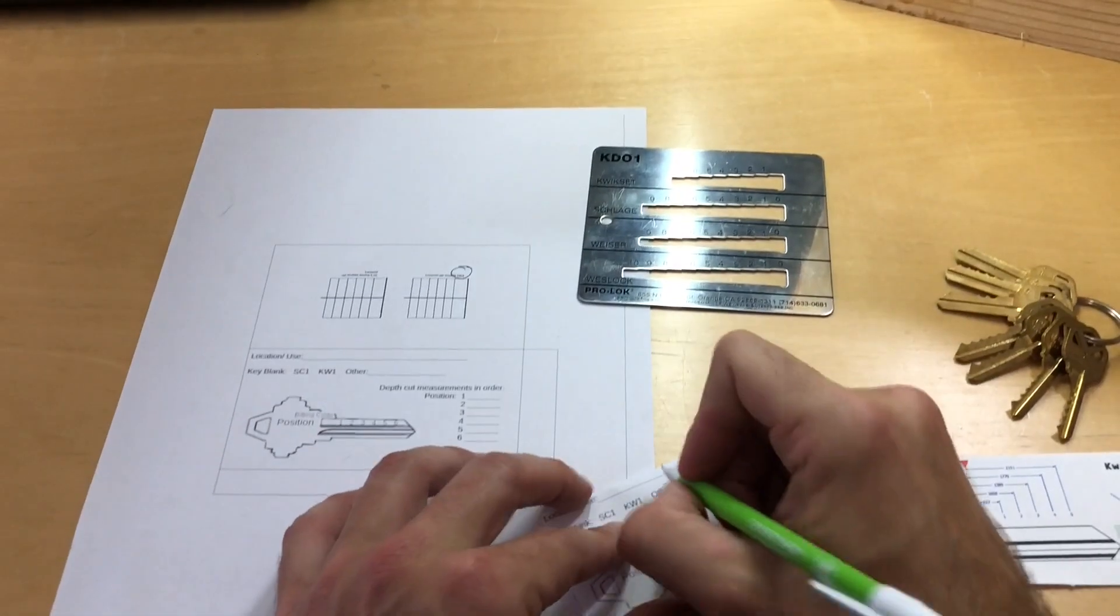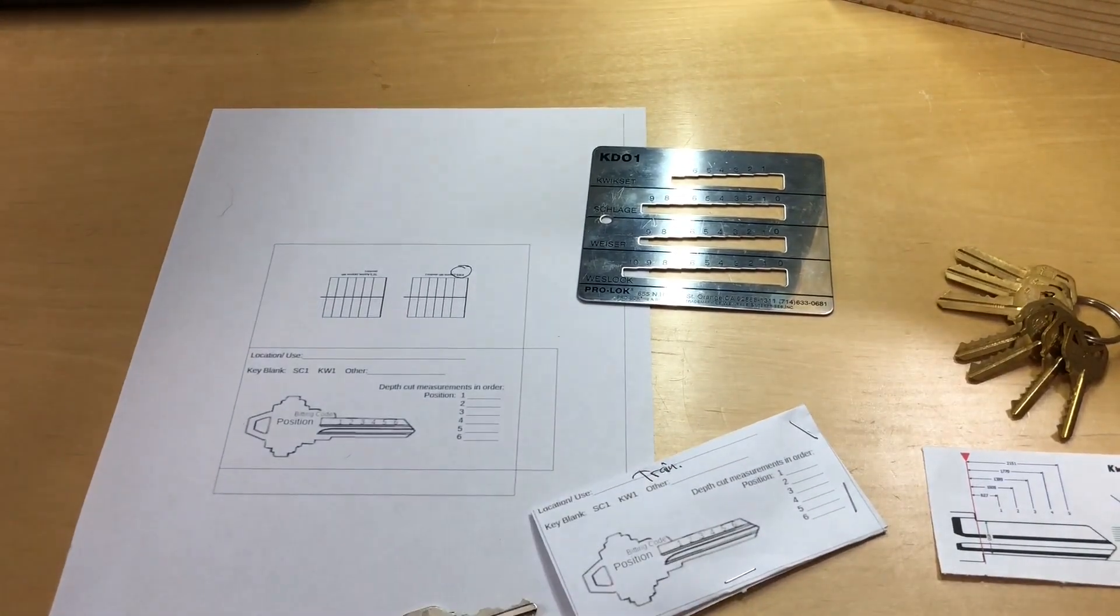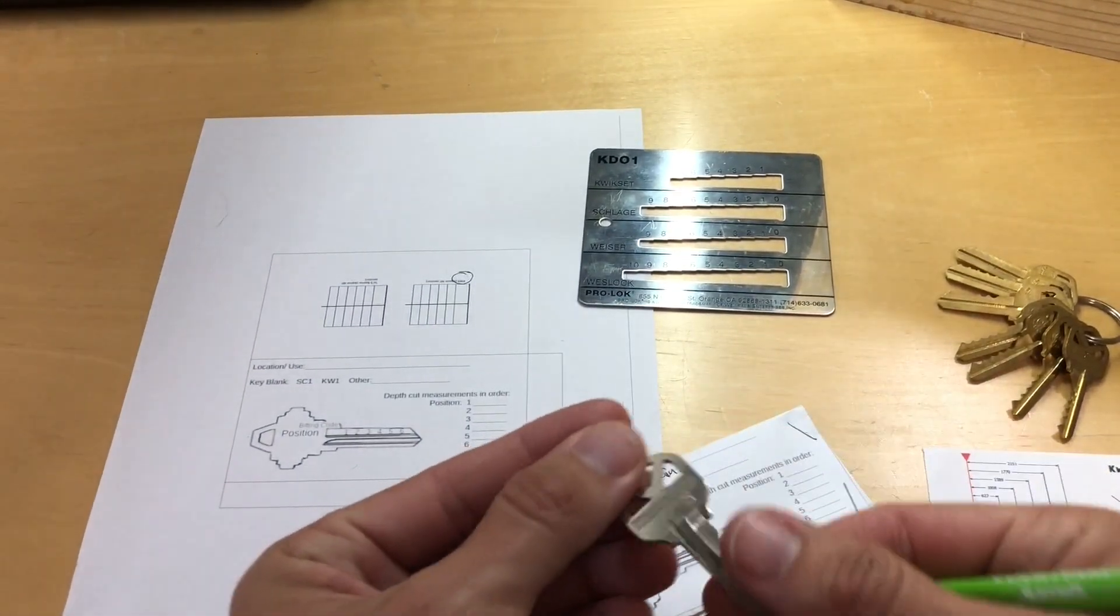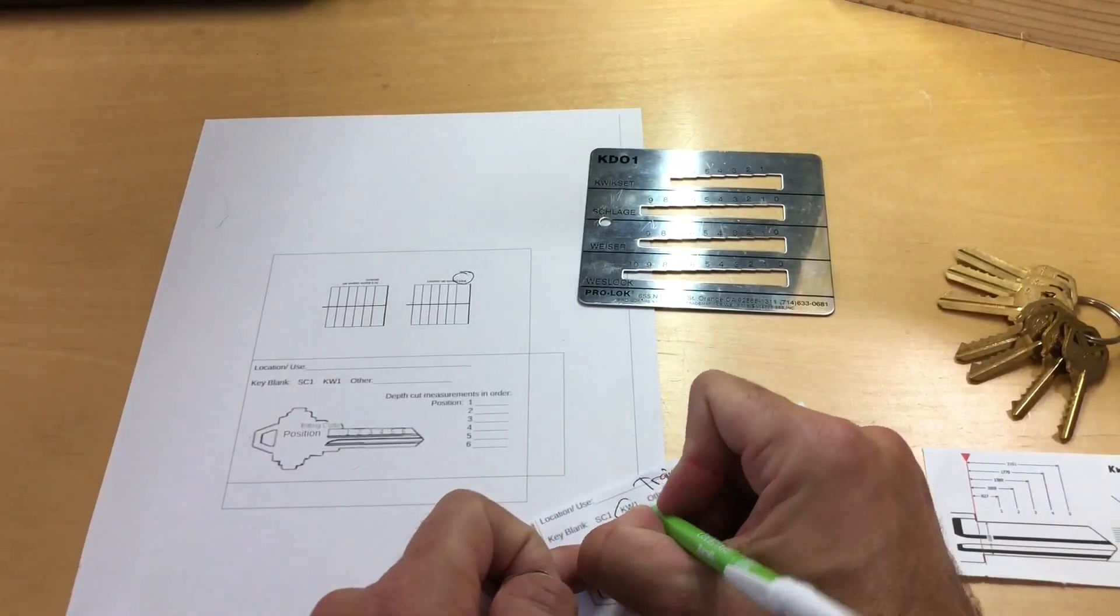So the location is training, T-R-A-I-N, I can spell. And you look at the key and this one will say on it Kwikset. They don't always, but this is a Kwikset key, KW1.